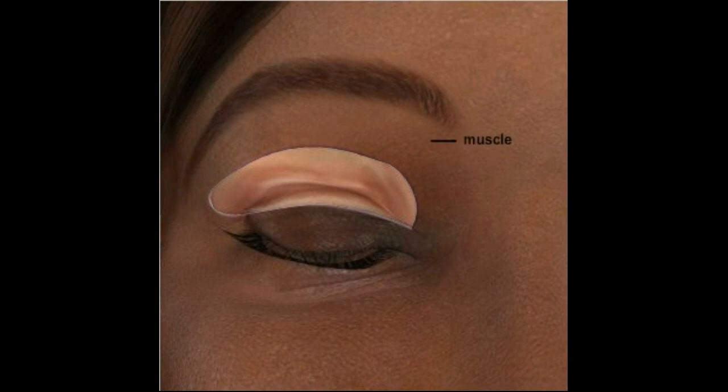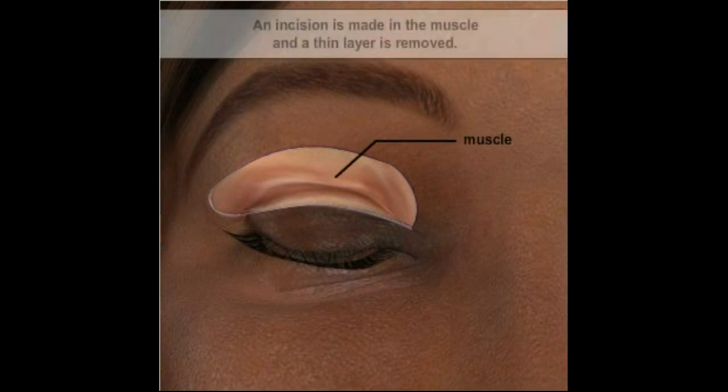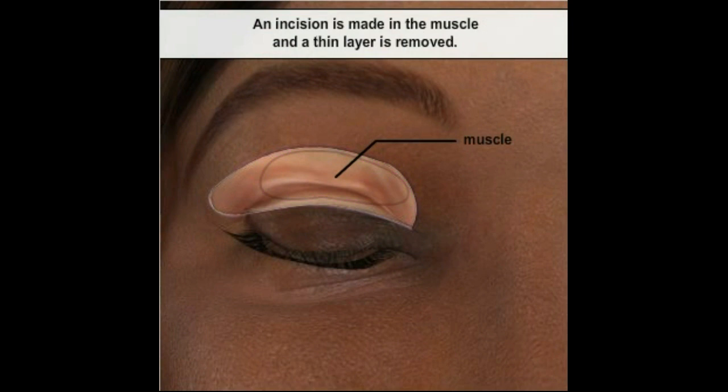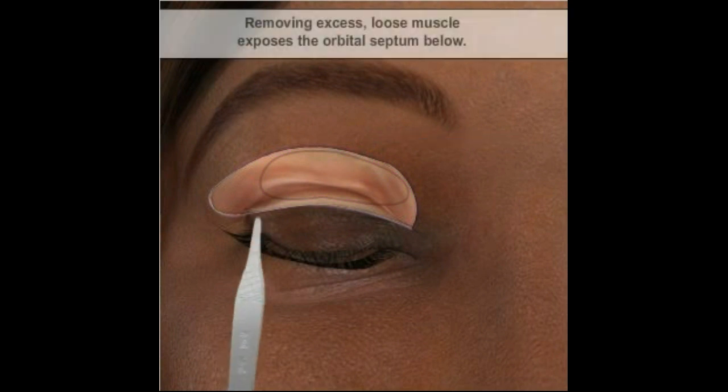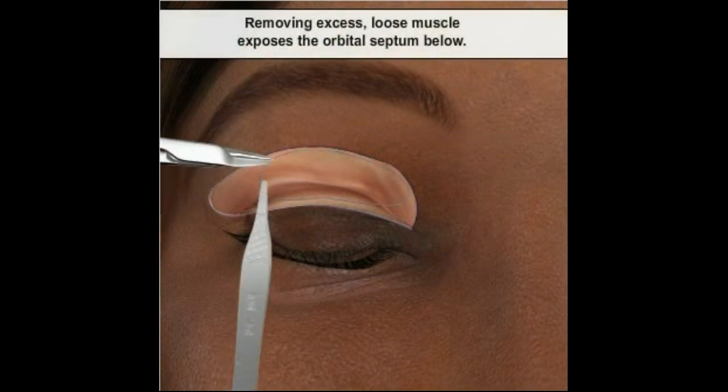In some instances, the physician will choose to remove a small strip of muscle from the upper eyelid, exposing the layers below.